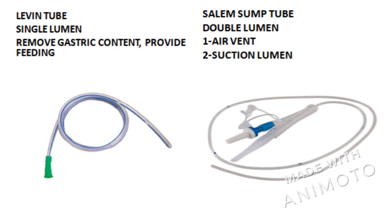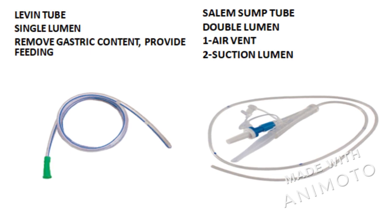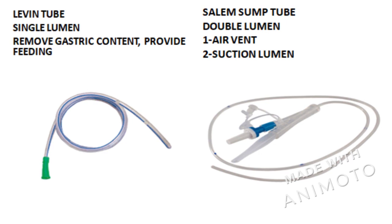There are two types of nasogastric tubes: first is the single lumen tube and second is the double lumen tube. The single lumen tube is the Levin tube, which is widely used in hospital settings for removing gastric content or providing tube feedings. The second is the Salem sump tube — it is a double lumen tube which has an air vent.